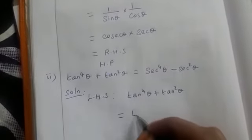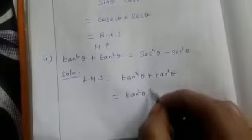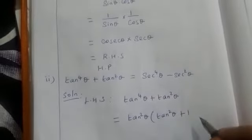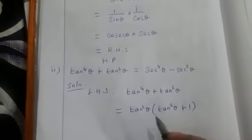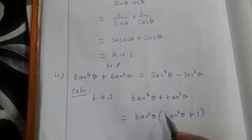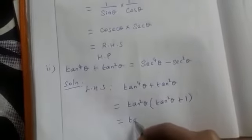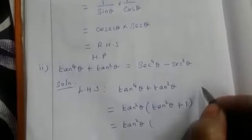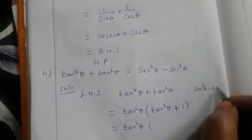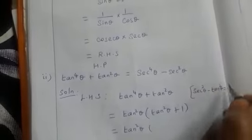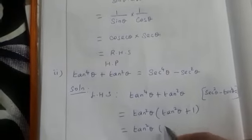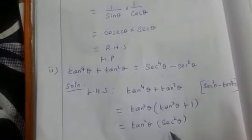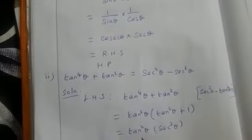In tan to the power 4 theta plus tan squared theta, tan squared theta is common in both terms. So let us take tan squared theta common outside. The first term becomes tan squared theta and the second term becomes 1, giving us tan squared theta into (tan squared theta plus 1). Now using the identity sec squared theta minus tan squared theta equals 1, we can write 1 plus tan squared theta equals sec squared theta. So tan squared theta plus 1 becomes sec squared theta.